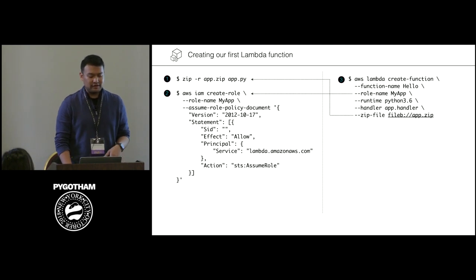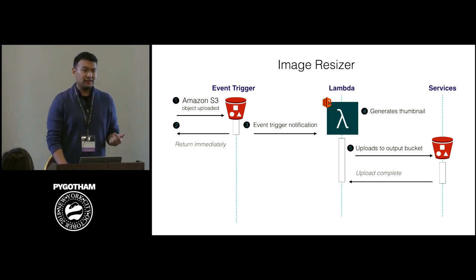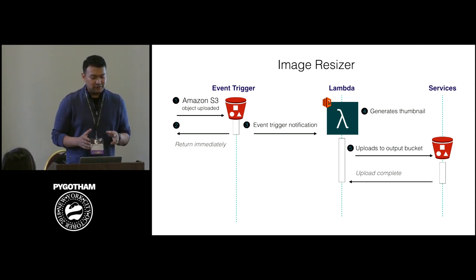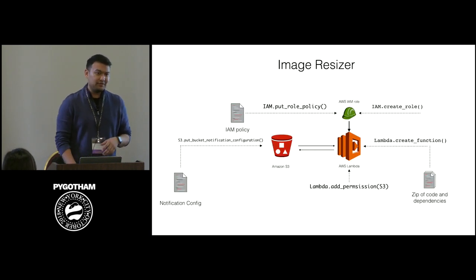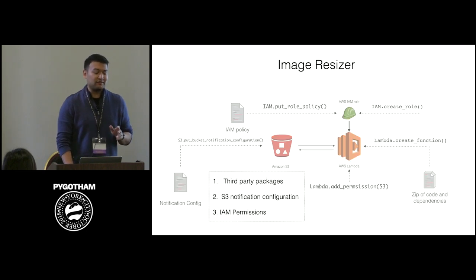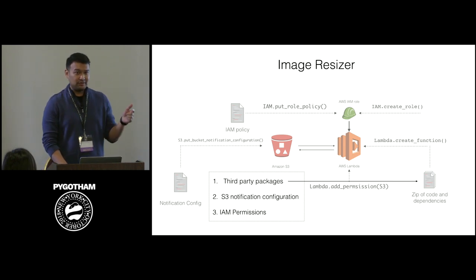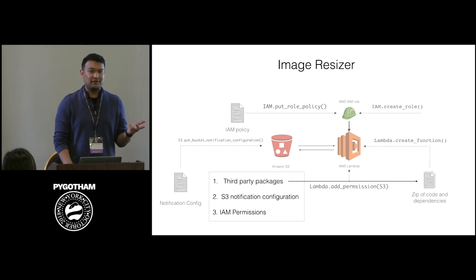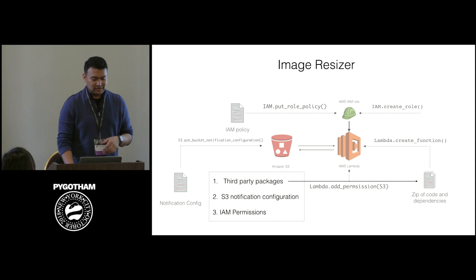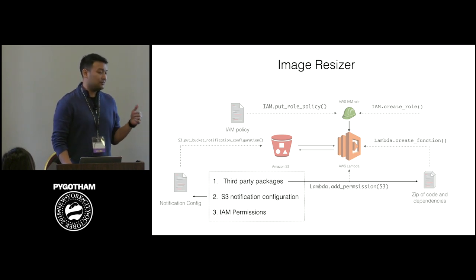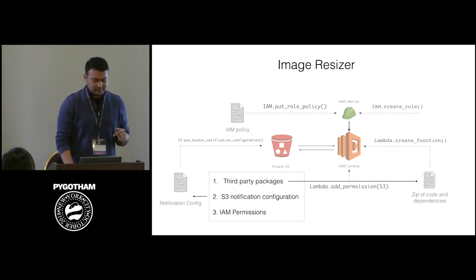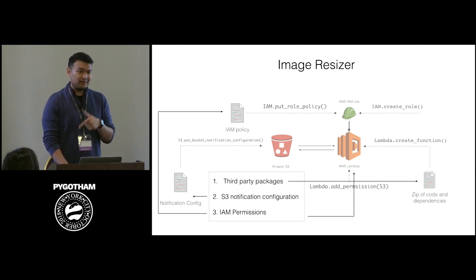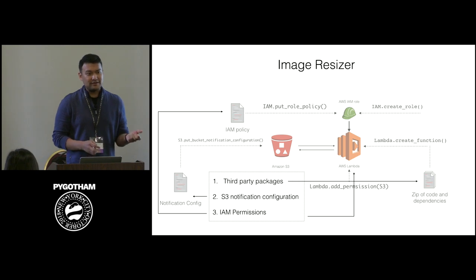If we take the image resizer example using asynchronous invocation, there's more work involved. Three main things to keep in mind: first, third-party packages — we need an SDK and an image processing library, and it gets tricky because Pillow has C extensions so we have to manage that for Lambda. Second, we need to configure S3 to call our Lambda function when certain events happen. Third, permissions — our Lambda function needs S3 access, and S3 needs permission to call our Lambda function. There are a number of tools available to make this happen.